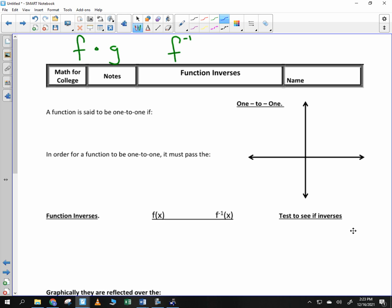In order for a function to be one-to-one, a function is said to be one-to-one if it passes both the vertical and horizontal line tests.